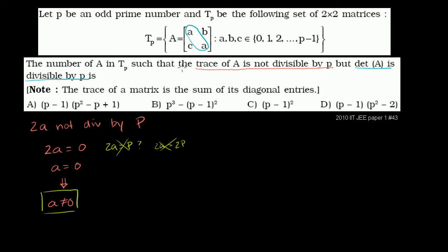Now let's look at the second constraint: the determinant of A is divisible by P. The determinant of A equals A times A minus B times C, which is A squared minus BC. So A squared minus BC must be divisible by P — equal to some integer times P.